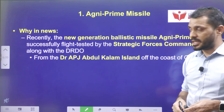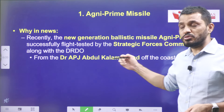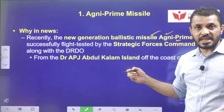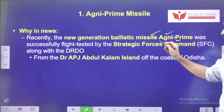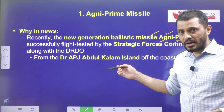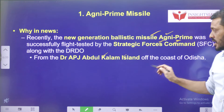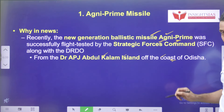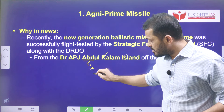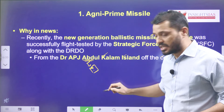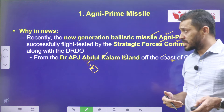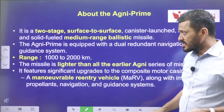Regarding the context, recently the new generation updated version of the ballistic missile Agni Prime was test-flighted by the Strategic Forces Command (SFC) along with DRDO, from the APJ Abdul Kalam Island off the coast of Odisha. What is the former name of this island? It previously used to be called by a different name.